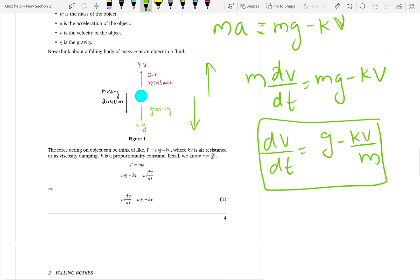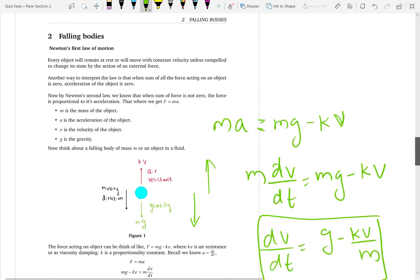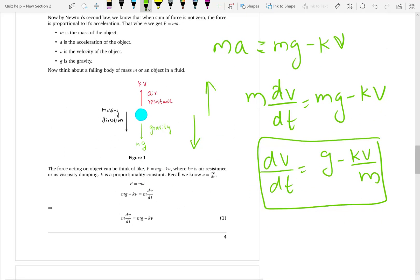K here is the proportionality constant again. It is also effective into the air resistance.